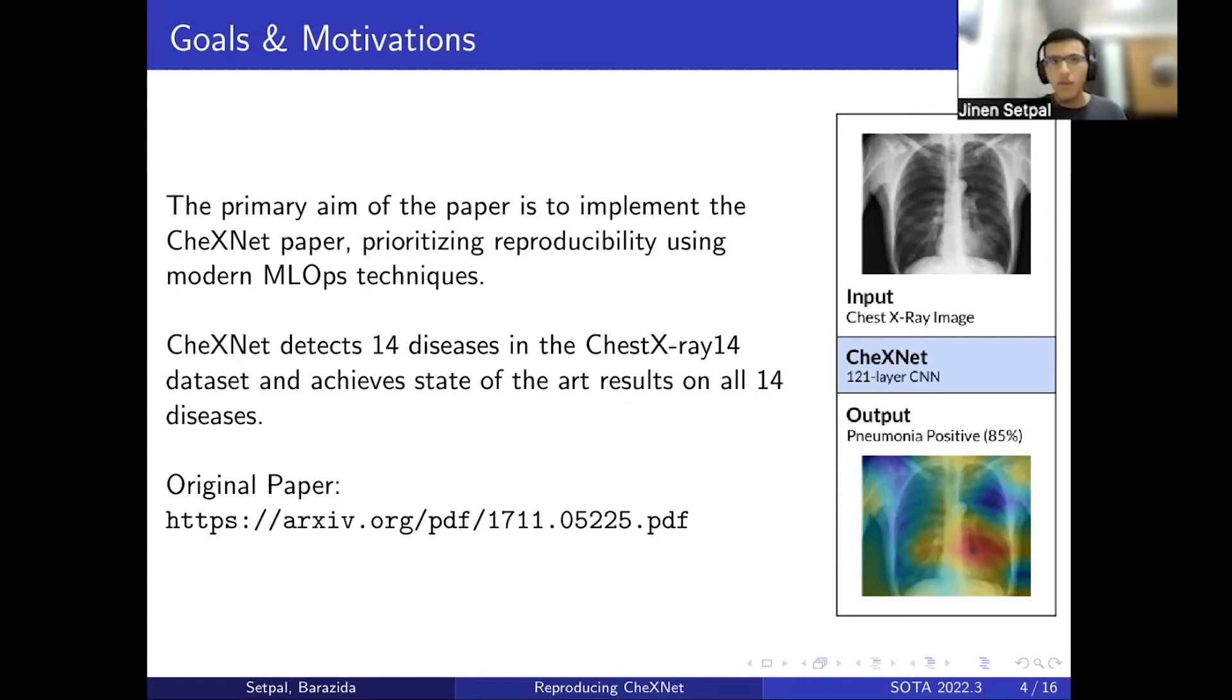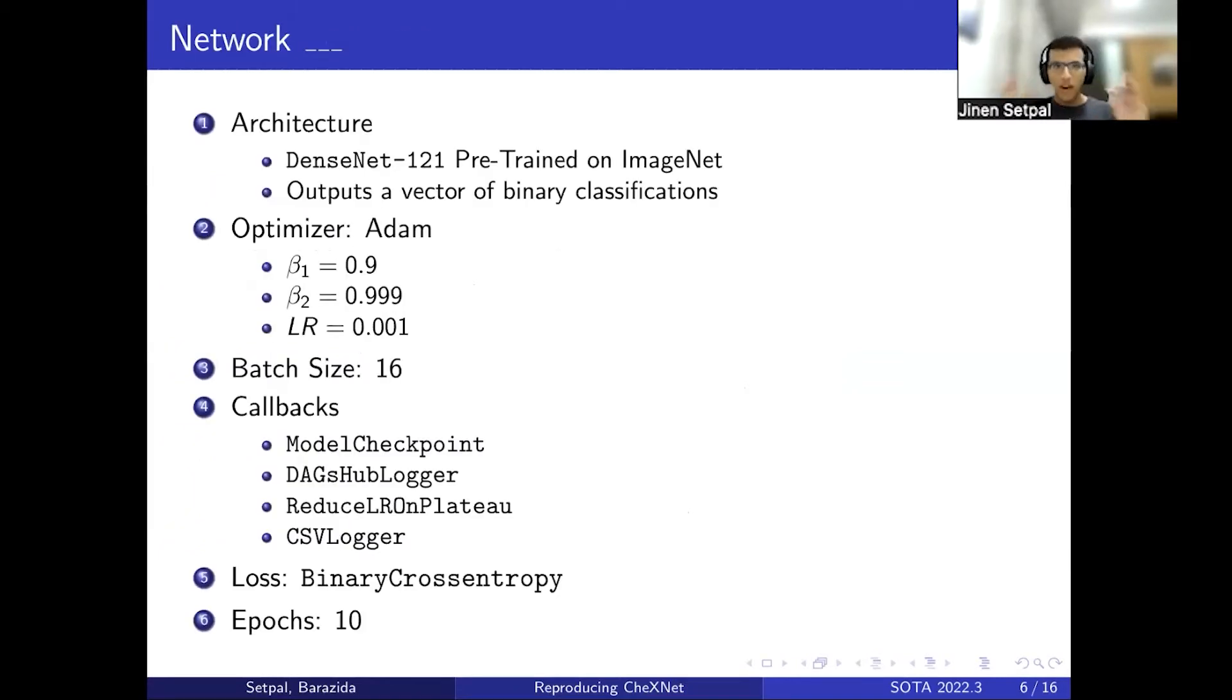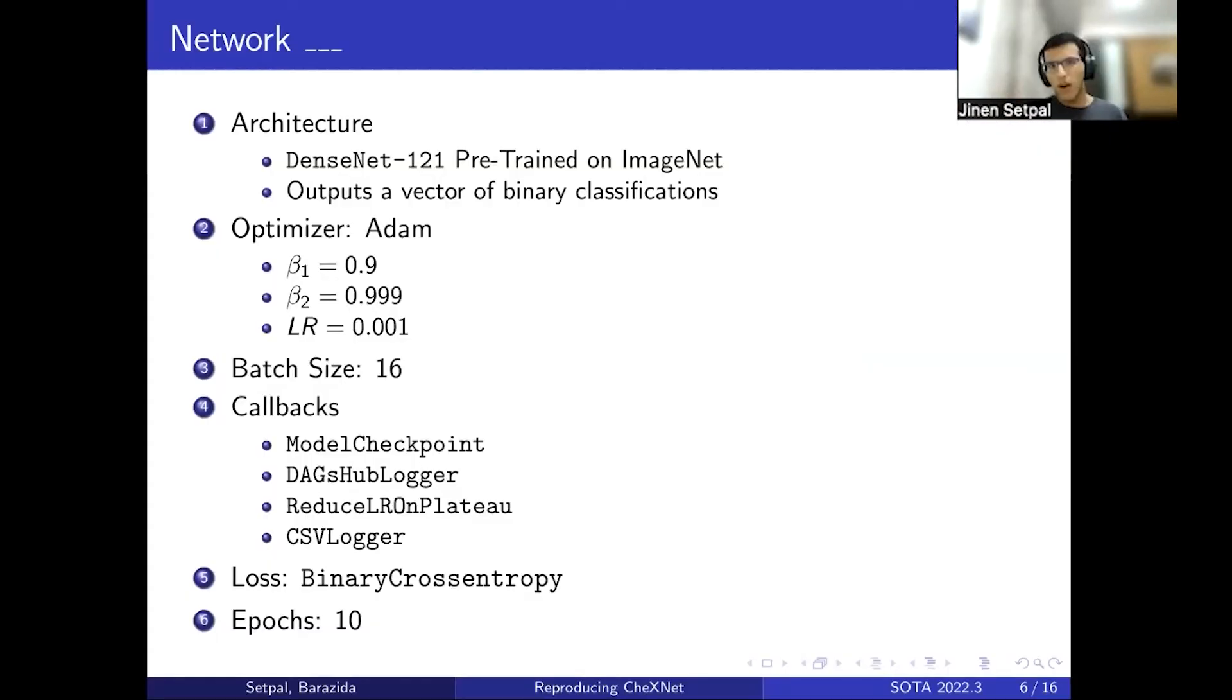With regards to the model itself, here are the main parameters. We have a DenseNet-121 model pre-trained on ImageNet which we fine-tune on the Chest X-ray dataset. The output is a vector of binary classifications, which allows for multiple classification, so someone can have pneumonia and cardiomegaly at the same time. The optimizer uses Adam with default parameters except for the learning rate.